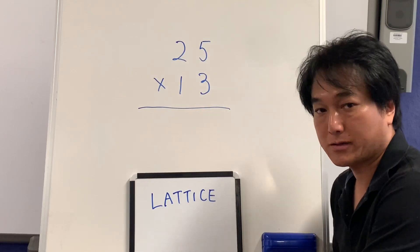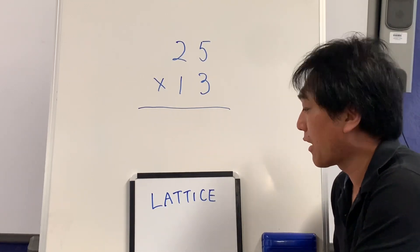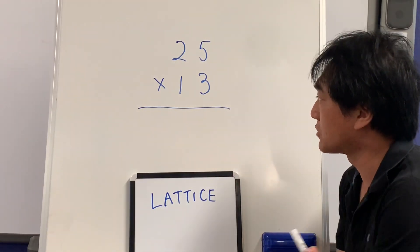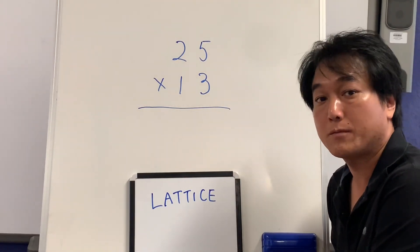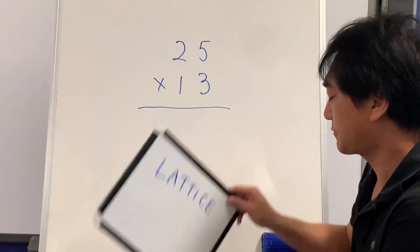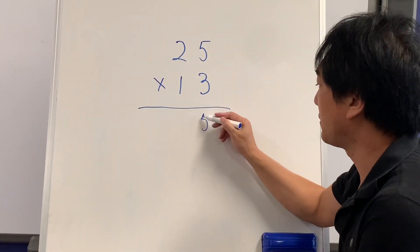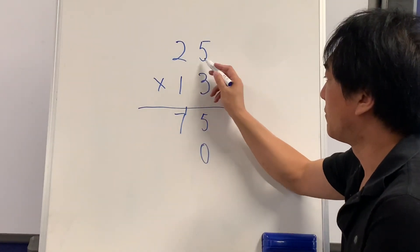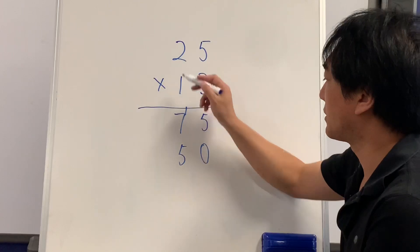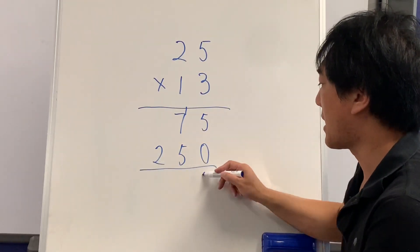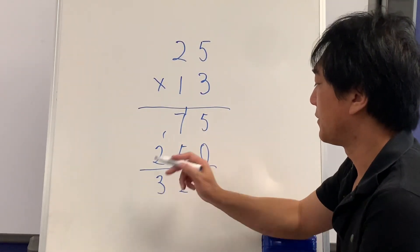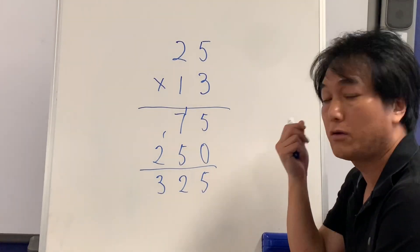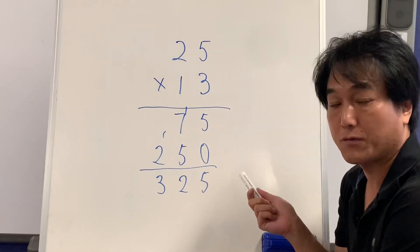We're going to practice lattice multiplication that you're going to thank me for life after this. This is the traditional way of doing 25 times 13. Five threes are 15, two threes is six, so it's seven. Put the zero, one times five is five, one times two is two. Adding together, you're going to have 325.